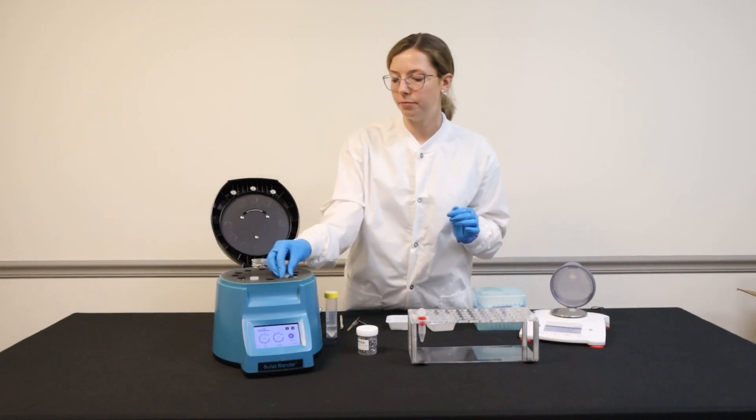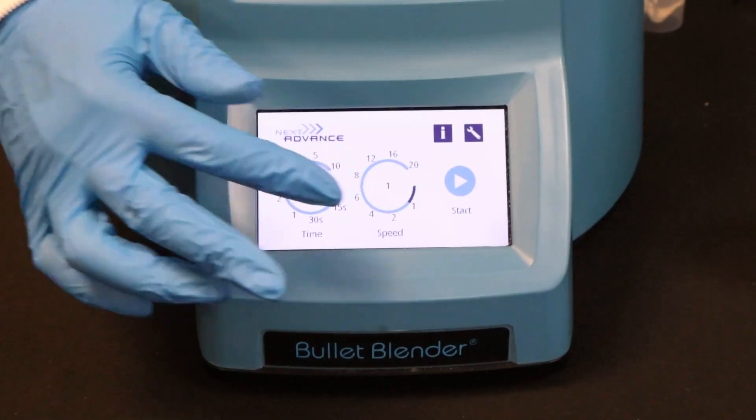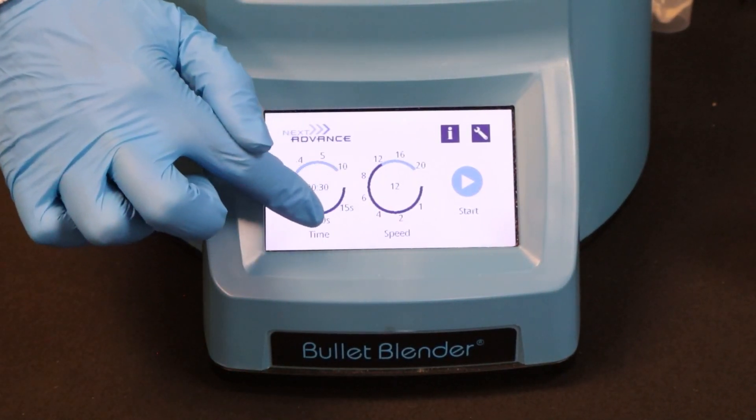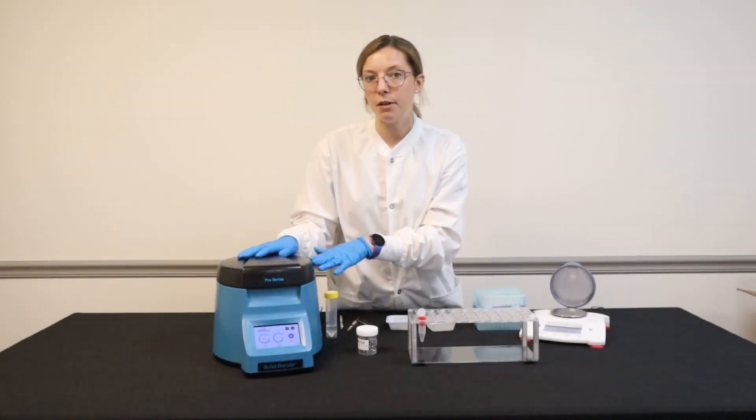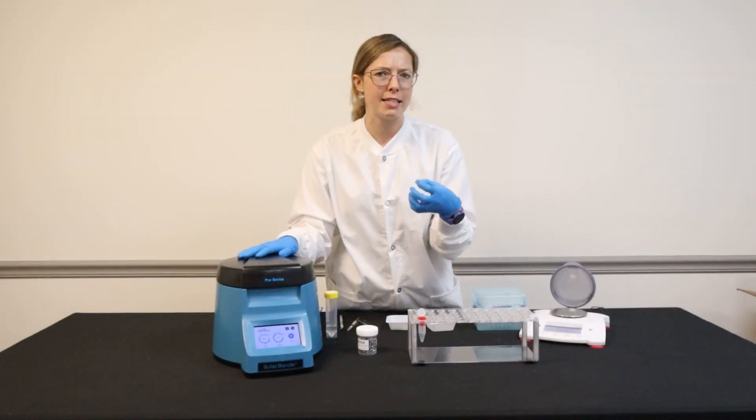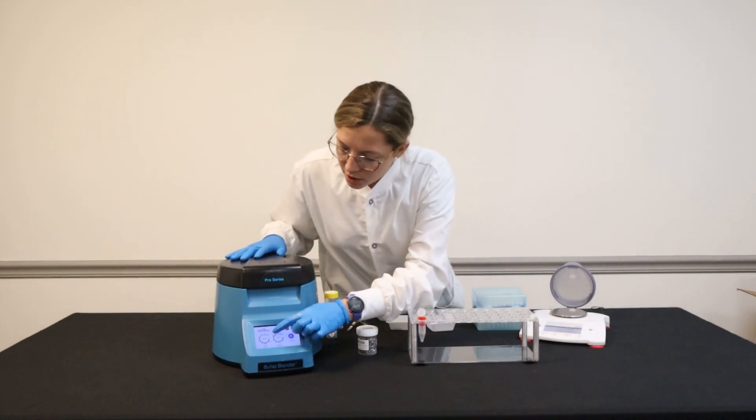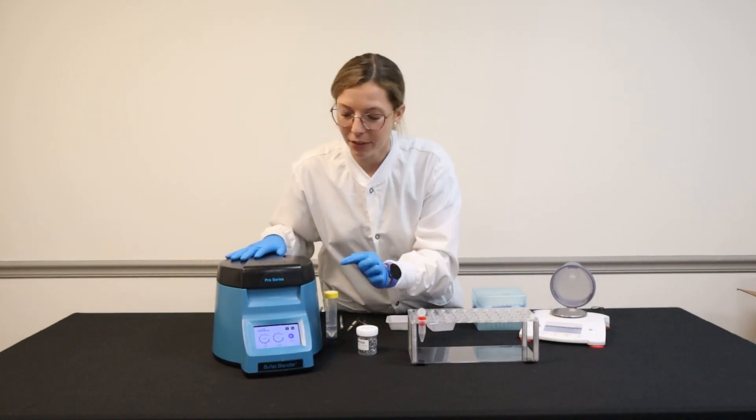For these samples, I'm going to homogenize at a speed of 12 for three minutes. The Bullet Blender does go up to a speed of 20, so if you have more aggressive, tougher tissues, feel free to adjust the speed as needed. So we're set for 12 and three minutes.